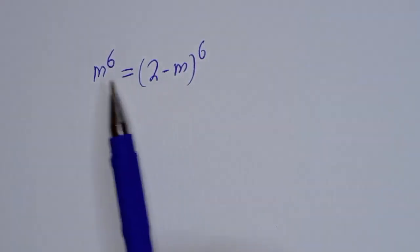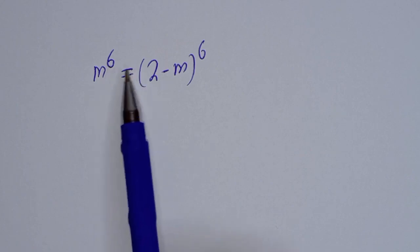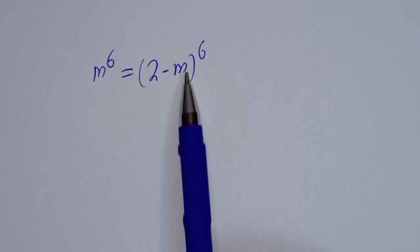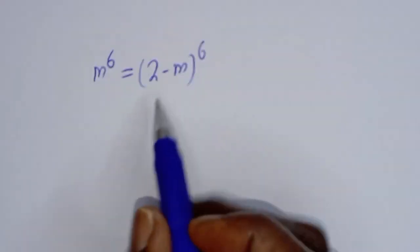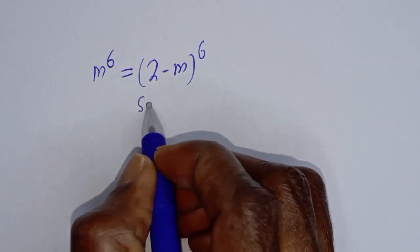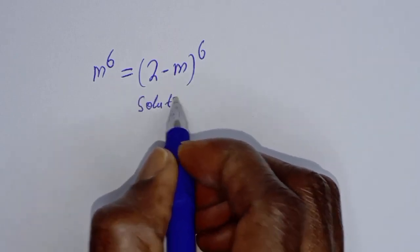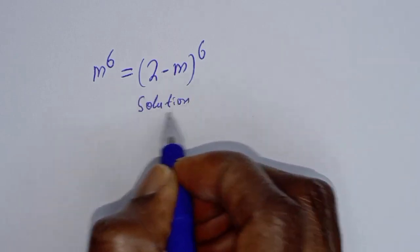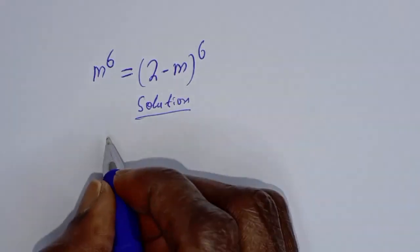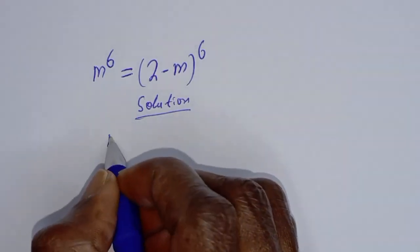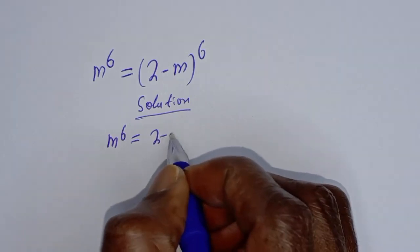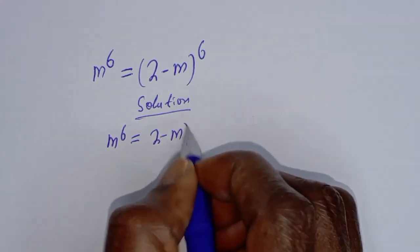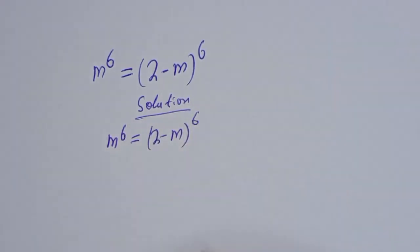Hello. How to solve for m from this given equation: m raised to power 6 is equal to 2 minus m raised to power 6.